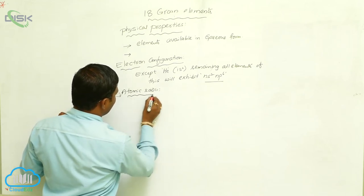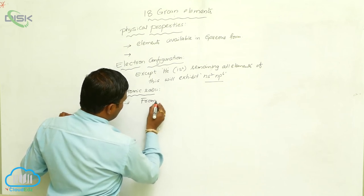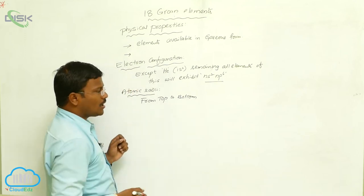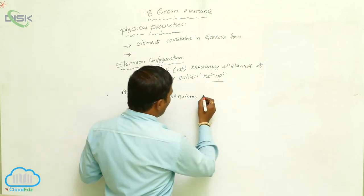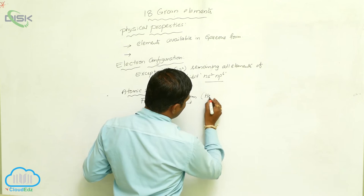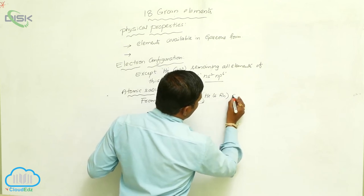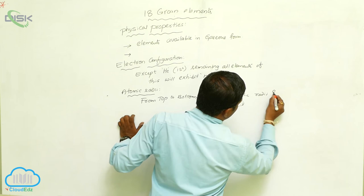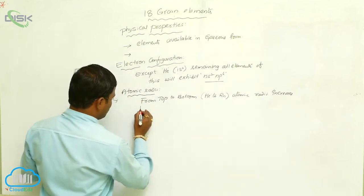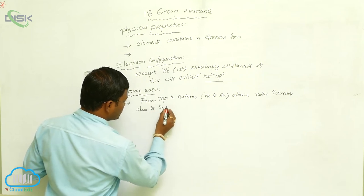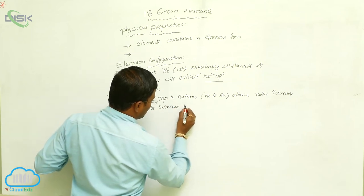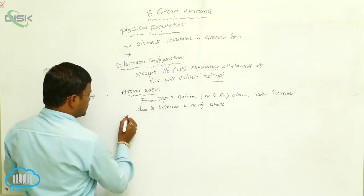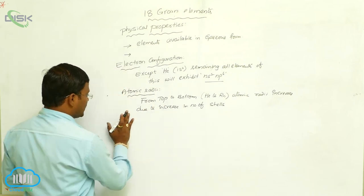Next, atomic size or atomic radii. From top to bottom — that is, from Helium to Radon or Helium to Oganesson — atomic radii increases due to the increase in number of shells or orbits. This is the reason atomic size increases from top to bottom.